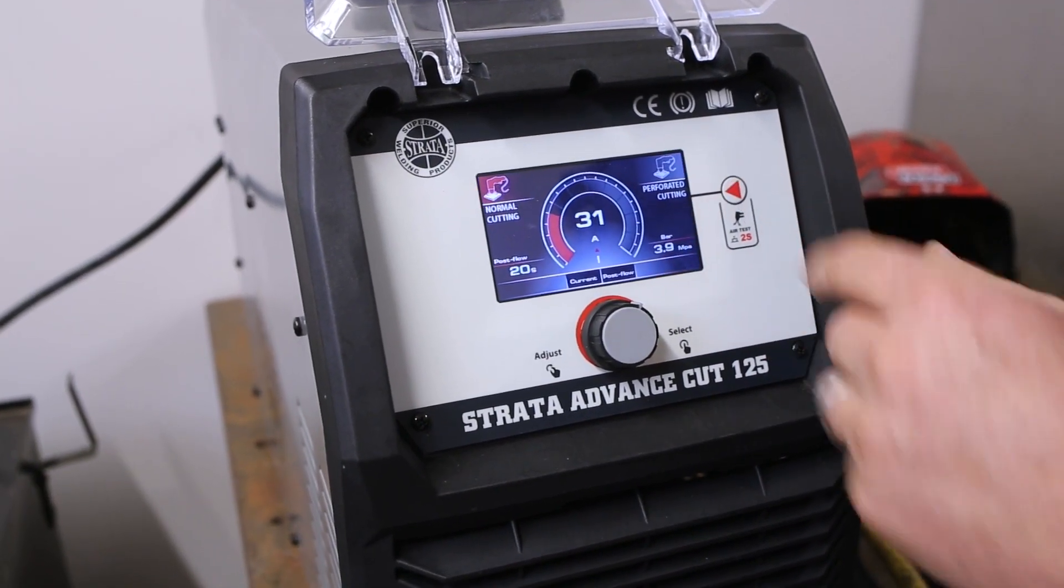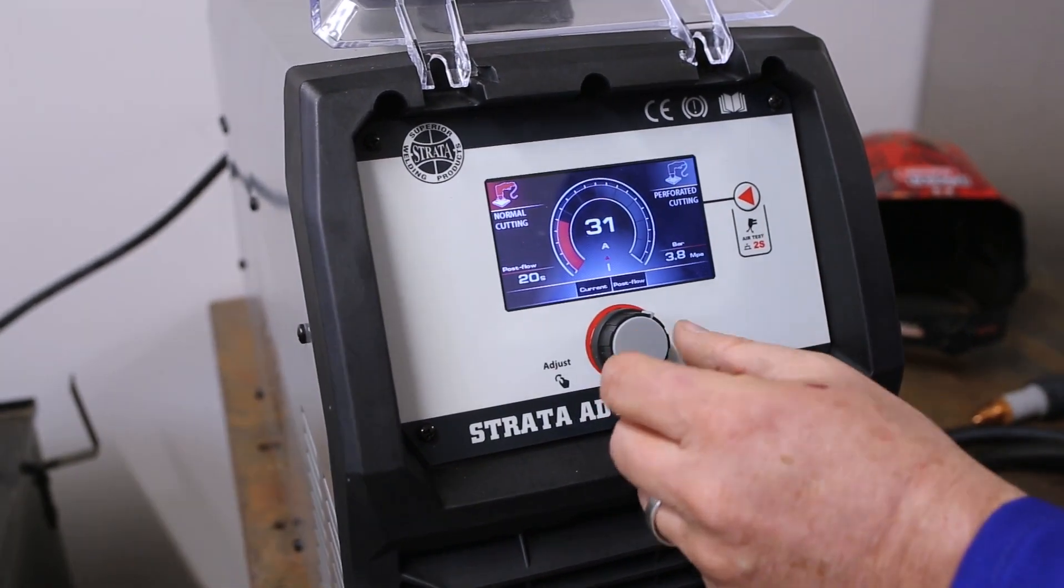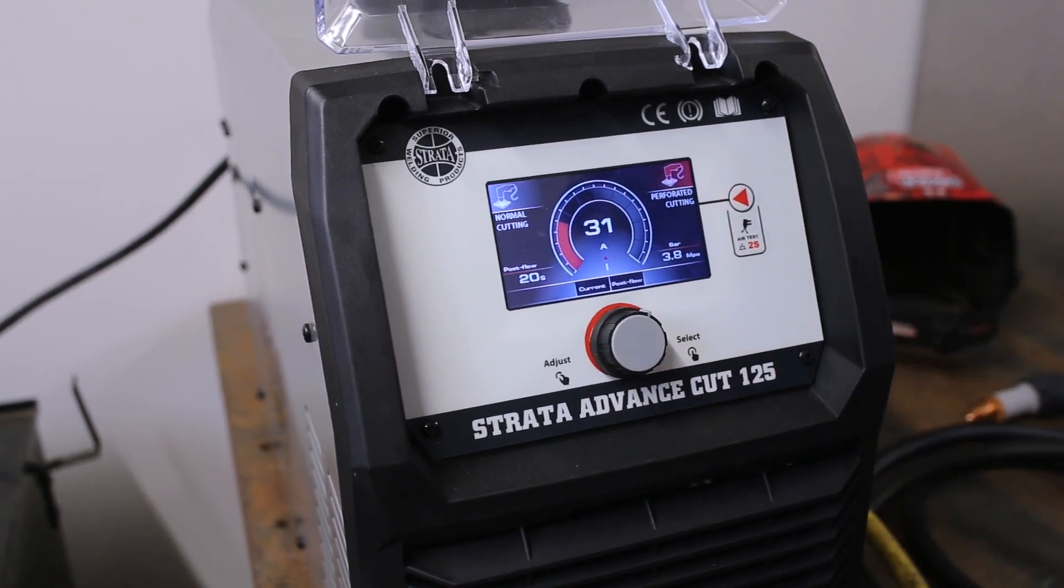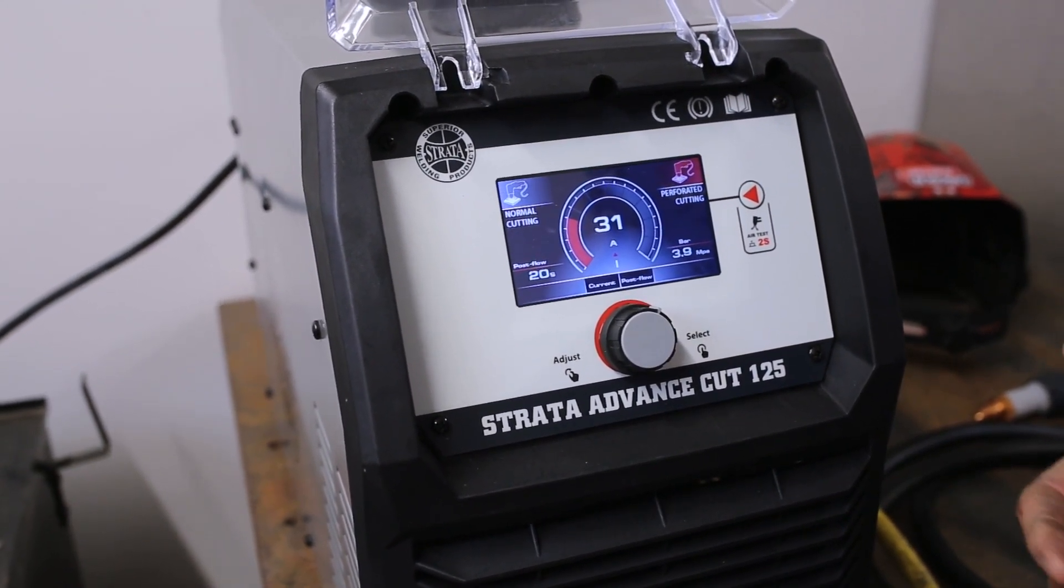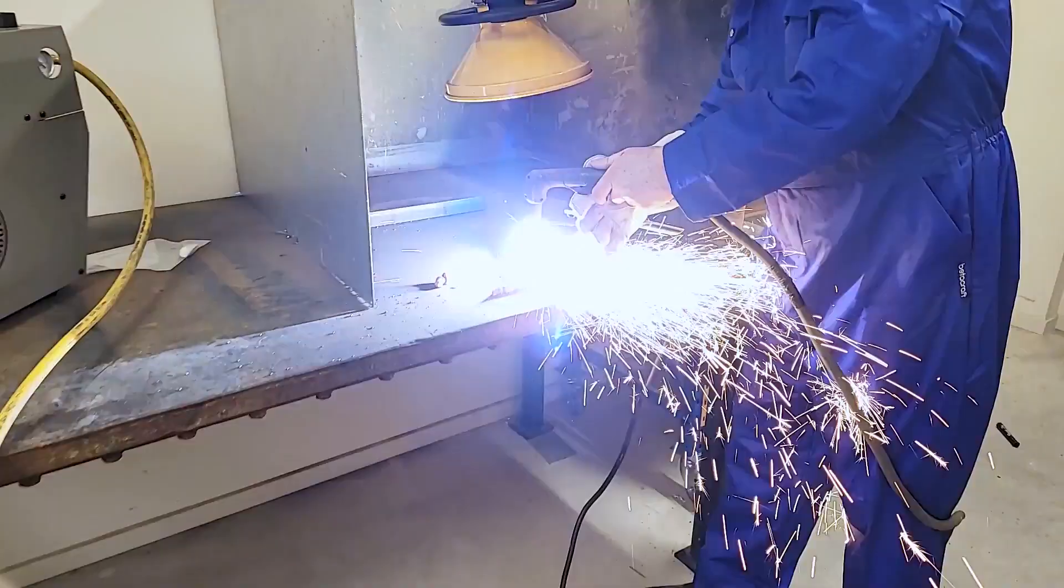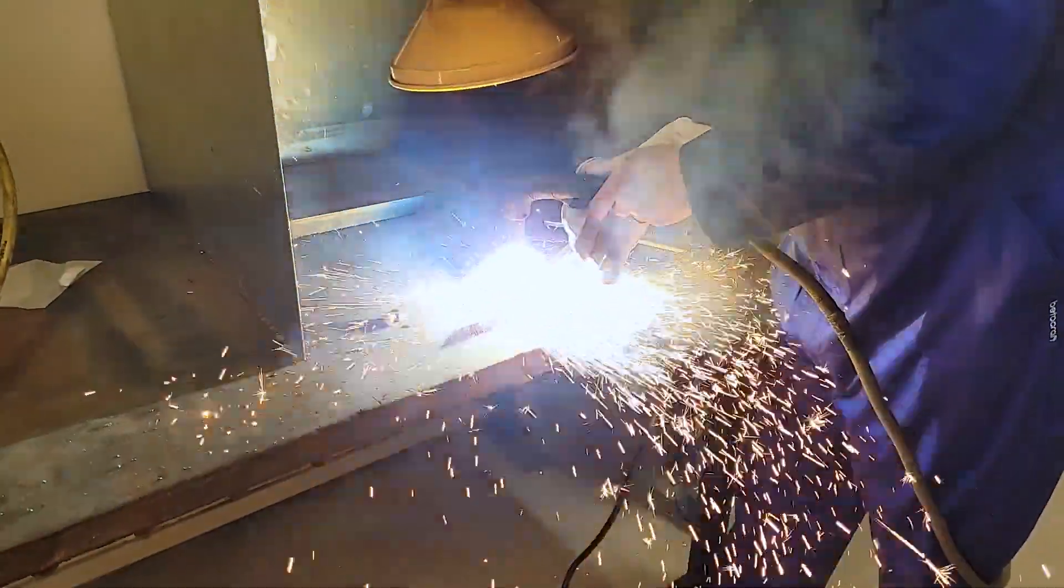Now let's have a look at how this machine works. So there's a normal cutting feature, a perforated cutting feature, there's main current and there's post flow. Normal cutting, when you pull the trigger you're going to get a pilot arc. Good to go.